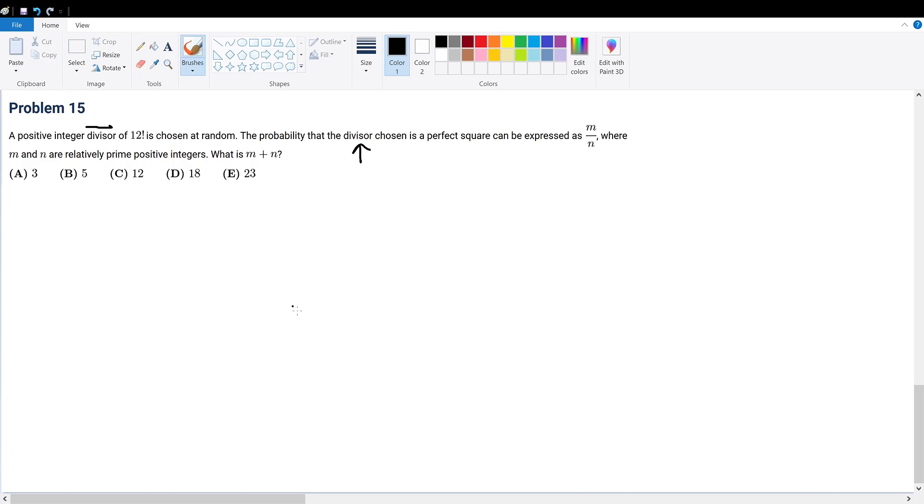AMC 10A, 2020, problem 15. A positive integer divisor of 12 factorial is chosen at random. The probability that the divisor chosen is a perfect square can be expressed as m over n, where m and n are relatively prime positive integers. What is m plus n?